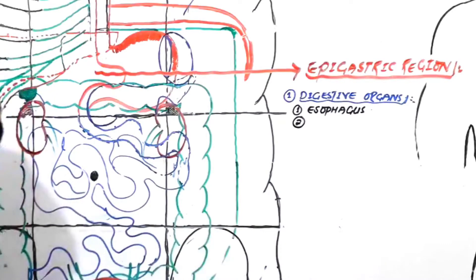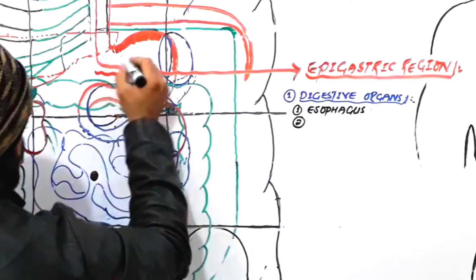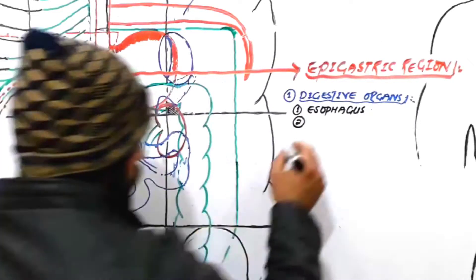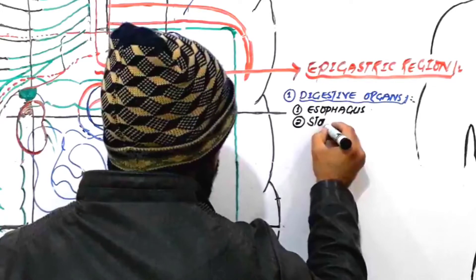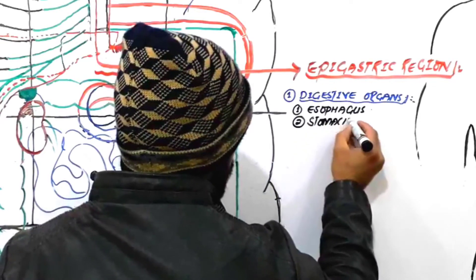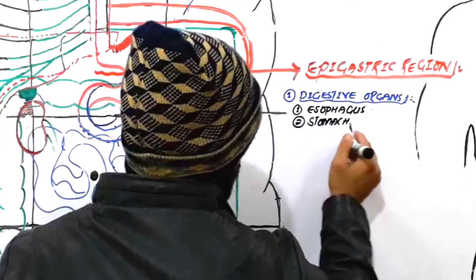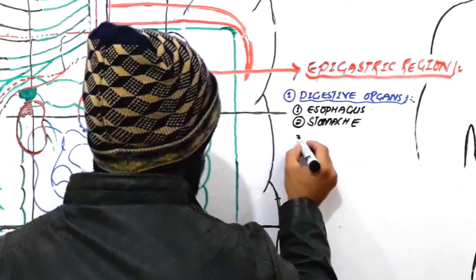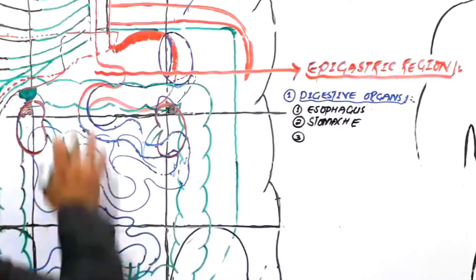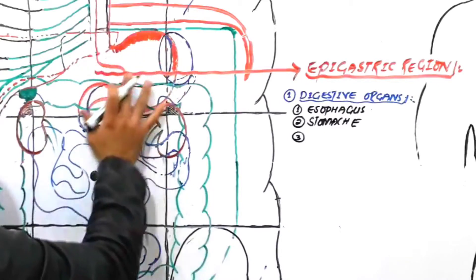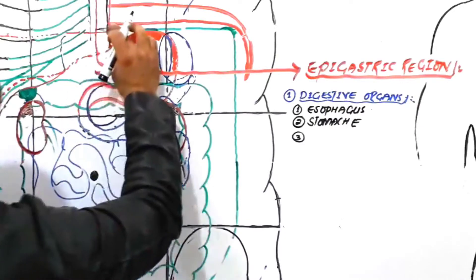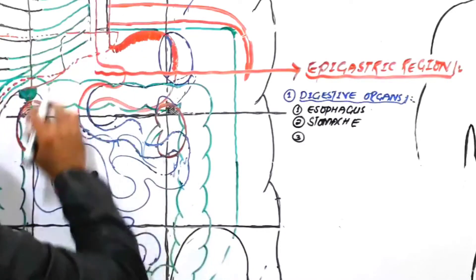Then you can see there is your stomach. The stomach is found in the epigastric region and it has a very important role in the digestion of food. So stomach is the second thing which is present in the epigastric region regarding the digestive organs.